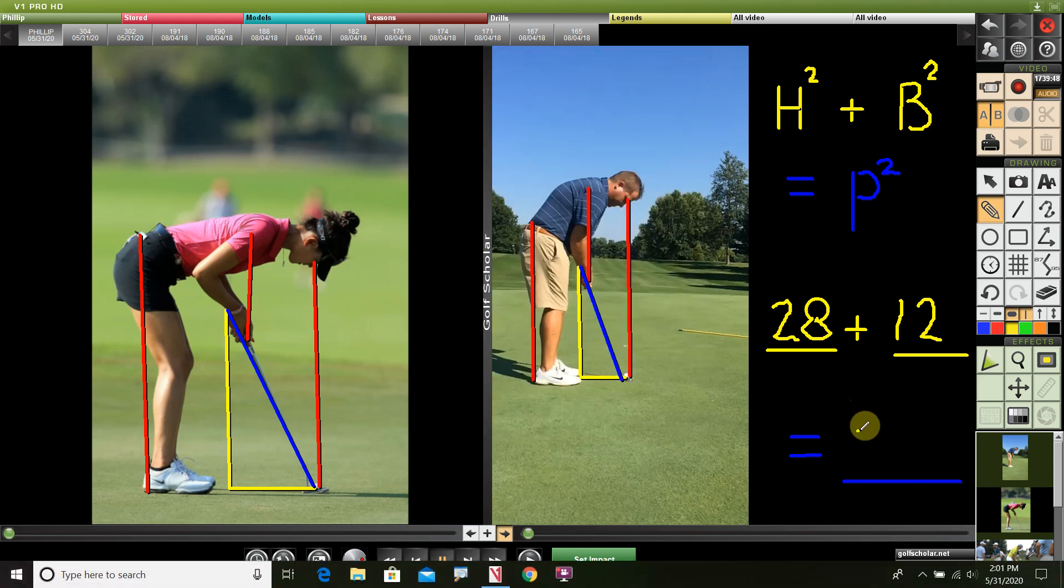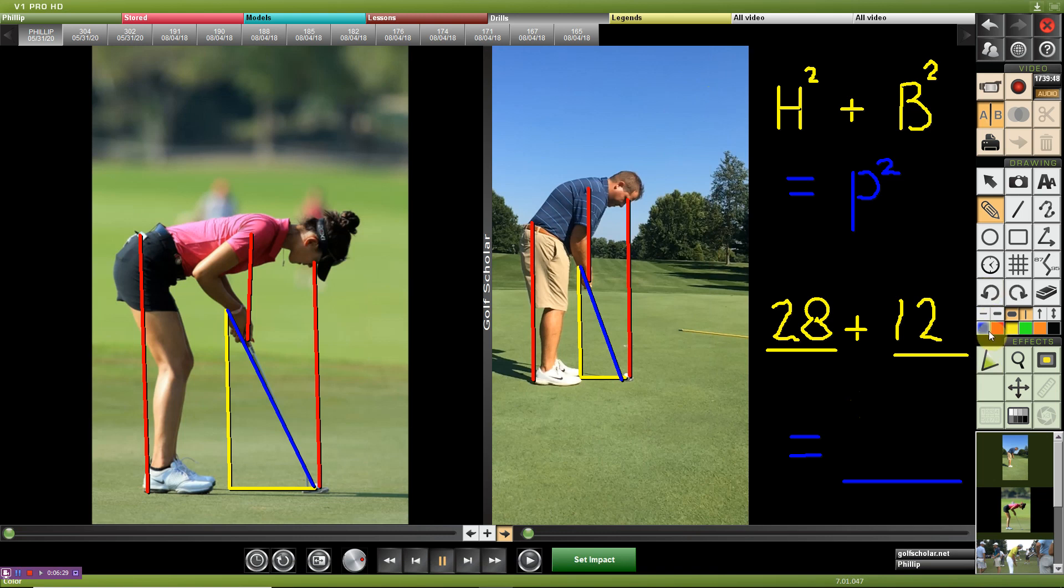So just with these estimated numbers for her, it would be a putter length of 30.4, which is really short, so I probably underestimated those numbers a little.